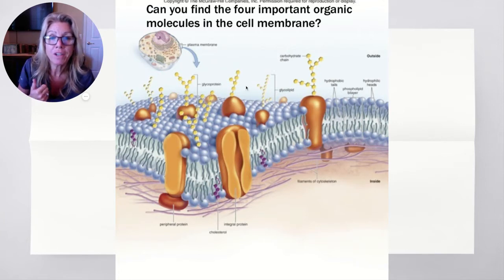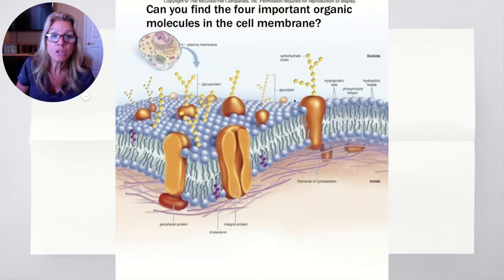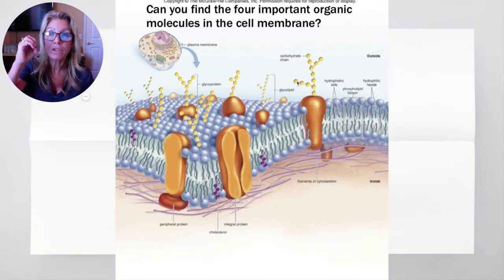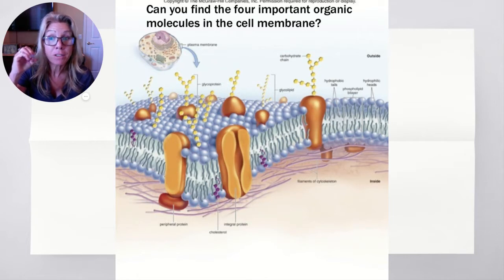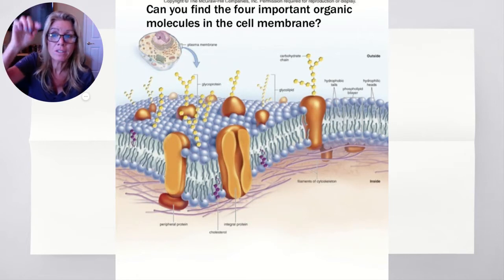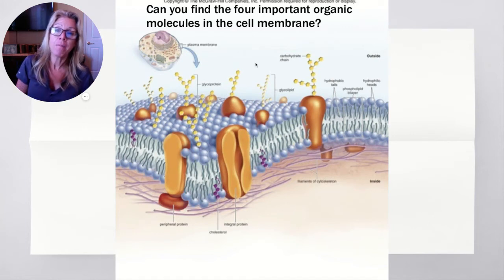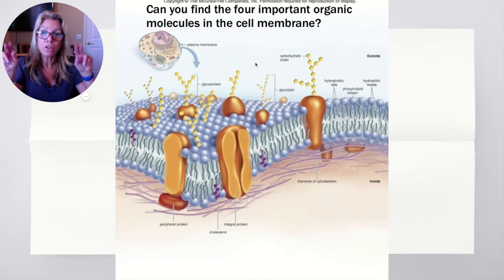Do we have any carbohydrate side chains? Yes, we do — they are right here. Do you see those little discs? Each one of those little discs would be like a monosaccharide, and so this is a whole chain of sugars hooked together. That's part of what's called the glycocalyx.